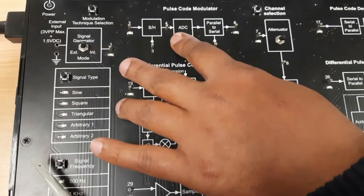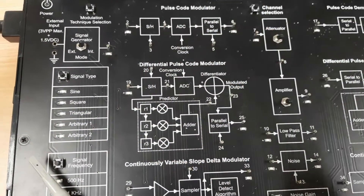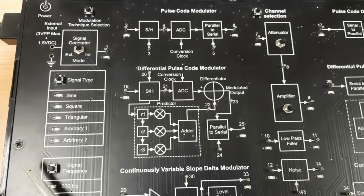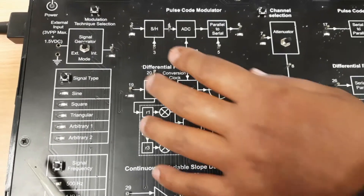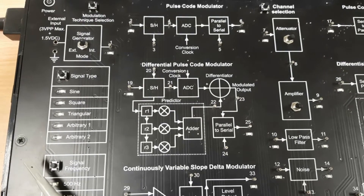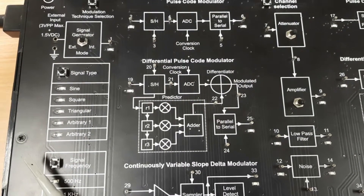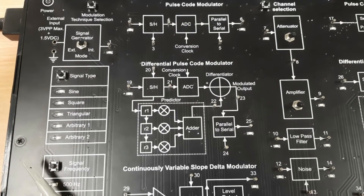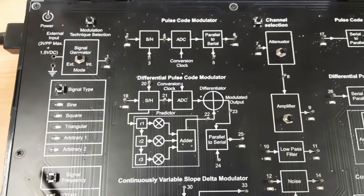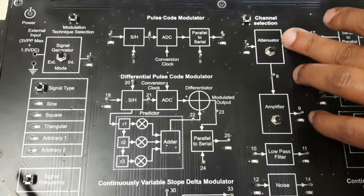This is the PCM configuration circuit. The input signal is directly applied to the sample-and-hold circuit, which periodically samples the analog input signal and converts it into samples of a multi-level PAM signal. The output of the sample-and-hold circuit is then applied to an ADC, or analog-to-digital converter. The ADC output is applied to a parallel-to-serial converter, which converts the parallel binary data into serial digital pulses. The signal is then passed through different channels.